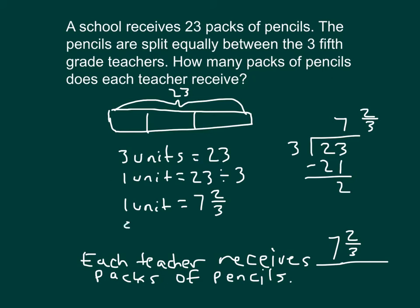Now, if we did our check for this, that would be three times seven and two-thirds, which as repeated addition is seven and two-thirds plus seven and two-thirds plus seven and two-thirds. Seven plus seven plus seven is 21. And then we have two-thirds plus two-thirds plus two-thirds, which would be six-thirds, which is also equal to two. And twenty-one plus two is twenty-three.